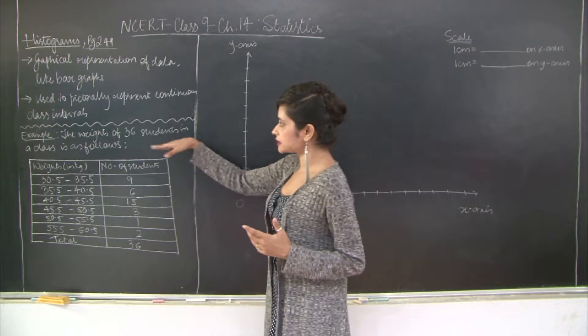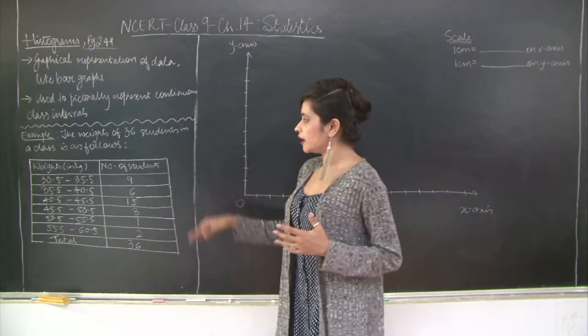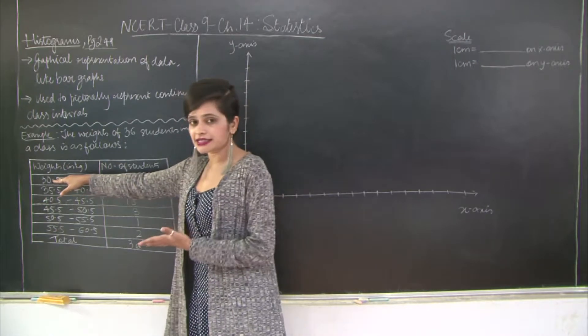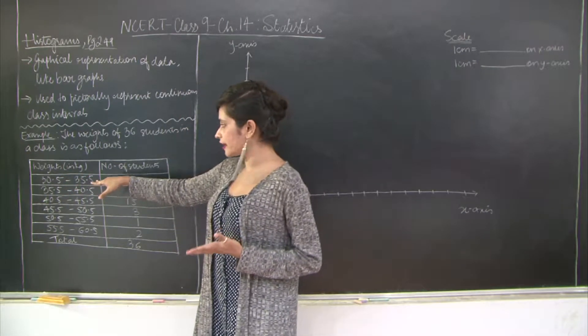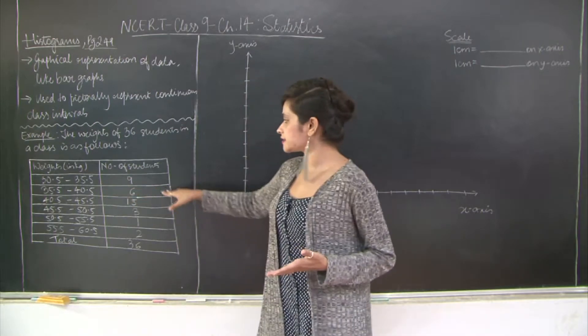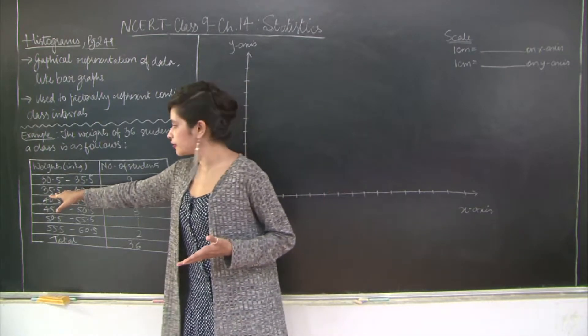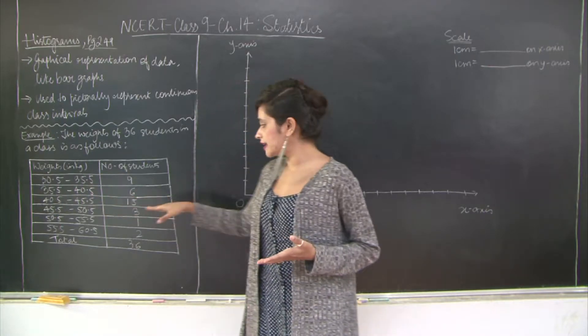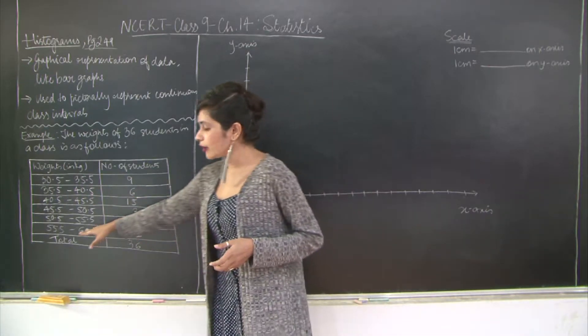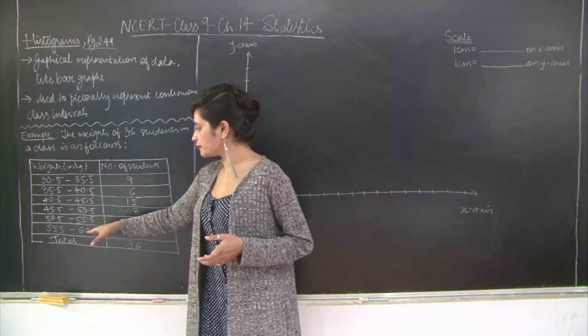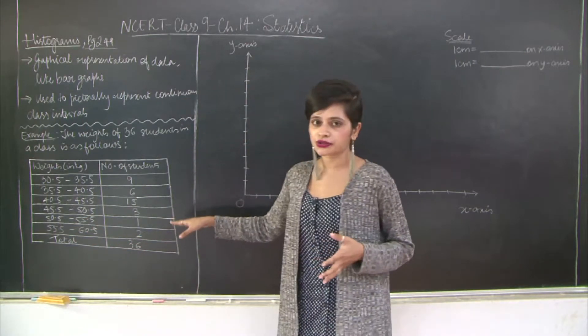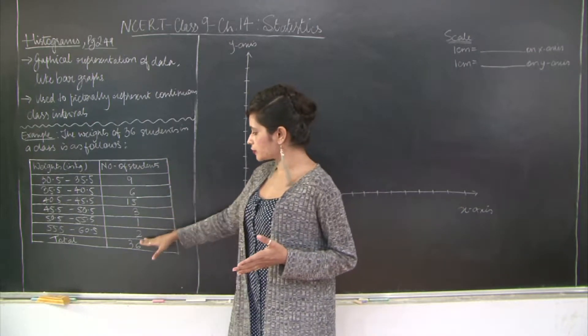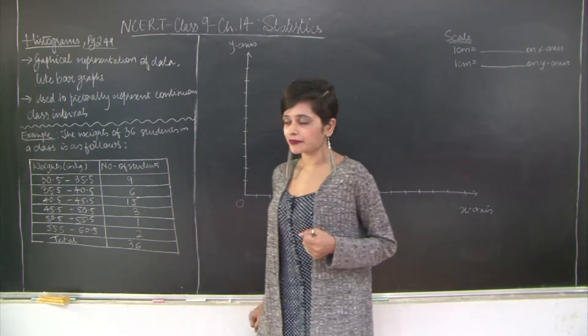We have a grouped frequency distribution table. The weights of 36 students in a class: there are nine students in the weight group 30.5 to 35.5 kg, six students from 35.5 to 40.5 kg, and so on until 55.5 to 60.5 which has two students. The total count is 36.